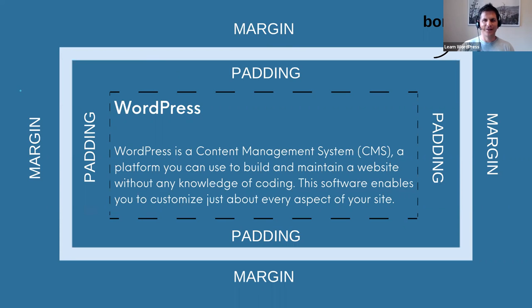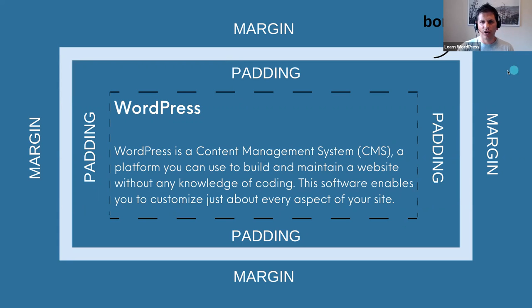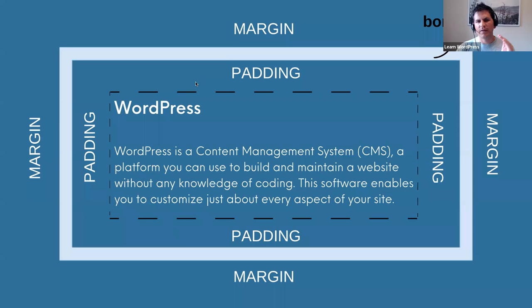To recap: you can create space around the content within your block using padding, and you can create space around your block or outside your block using margin. You'll also notice that with a lot of blocks you are only able to change the top and bottom margin, while with padding you can usually change the top, bottom, left, and right.